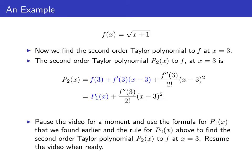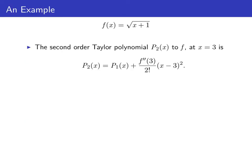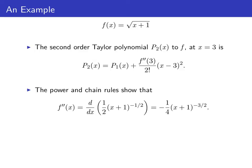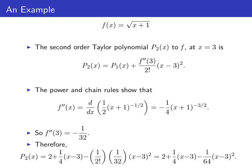We've already calculated p sub one of x, so pause the video and use that formula to find p sub two of x. The second derivative of f at x is negative one quarter times x plus one to the negative three halves, so f double prime of three is negative one over thirty-two. This makes p sub two of x equal to p sub one of x minus one over thirty-two divided by two factorial times x minus three squared, or two plus one quarter times x minus three minus one over 64 times x minus three squared. Again, notice the powers of x minus three in this Taylor polynomial.